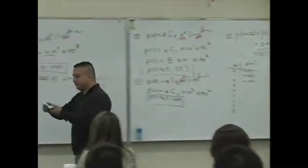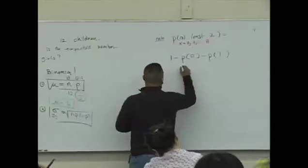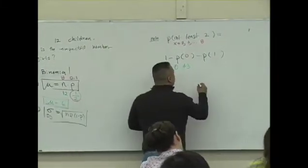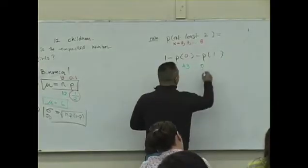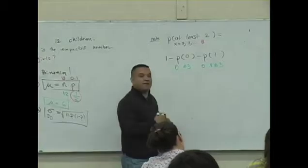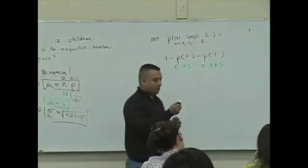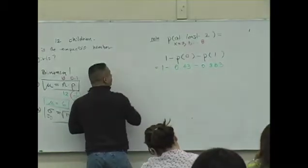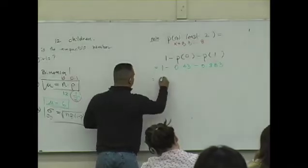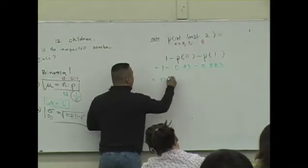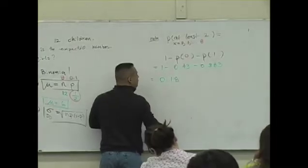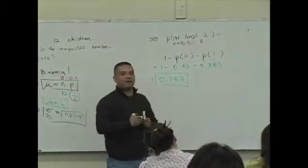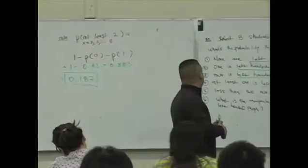What is p of zero? Point four three. What's p of one? Point three. You see what I mean? You have the information. So, one minus this stuff, what does that equal? Point one eight seven. So, the probability that at least two students are left-handed when I select eight is point one eight seven.